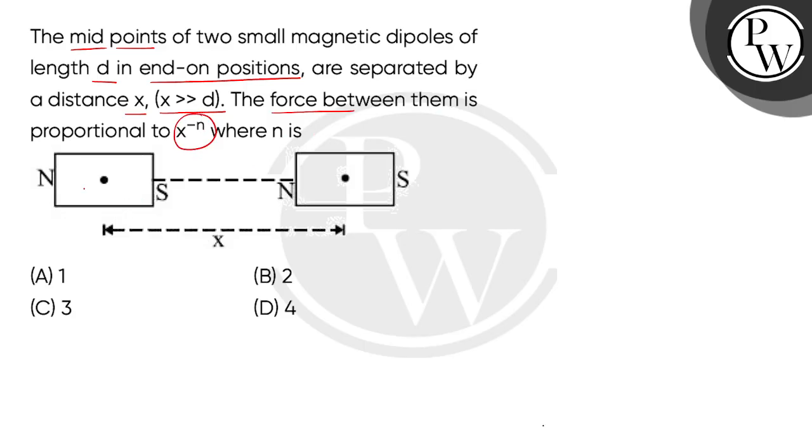We have seen this diagram - we have two short magnetic dipoles named 1 and 2, and the center to center distance is shown as x. We are told that the force is proportional to x to the power minus n, so we have to choose n values from the options.